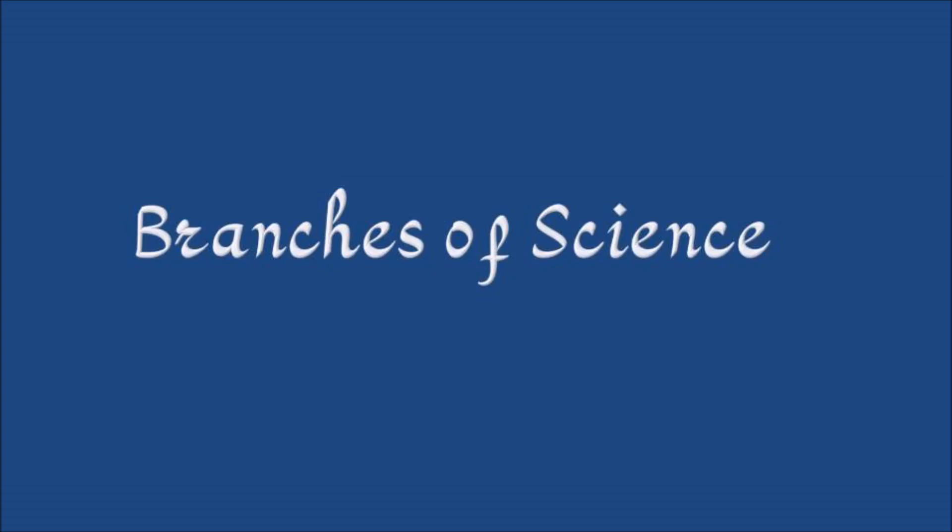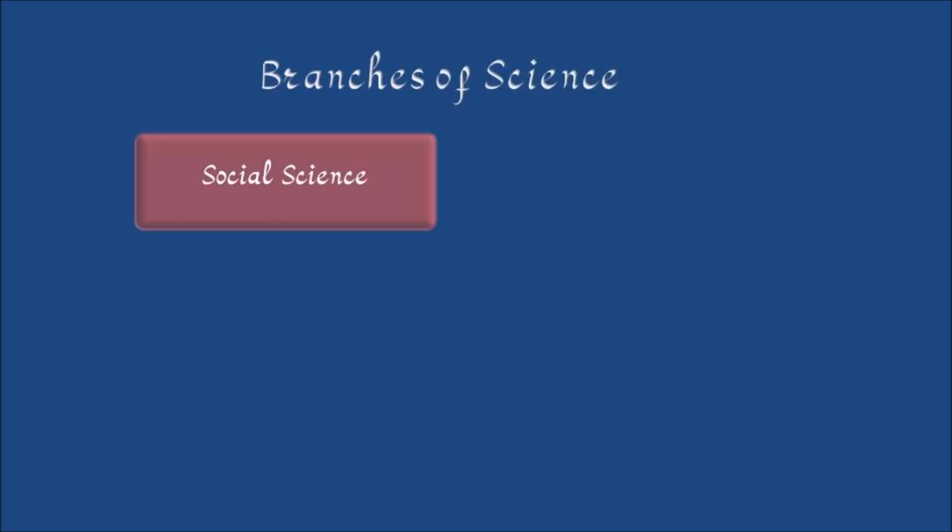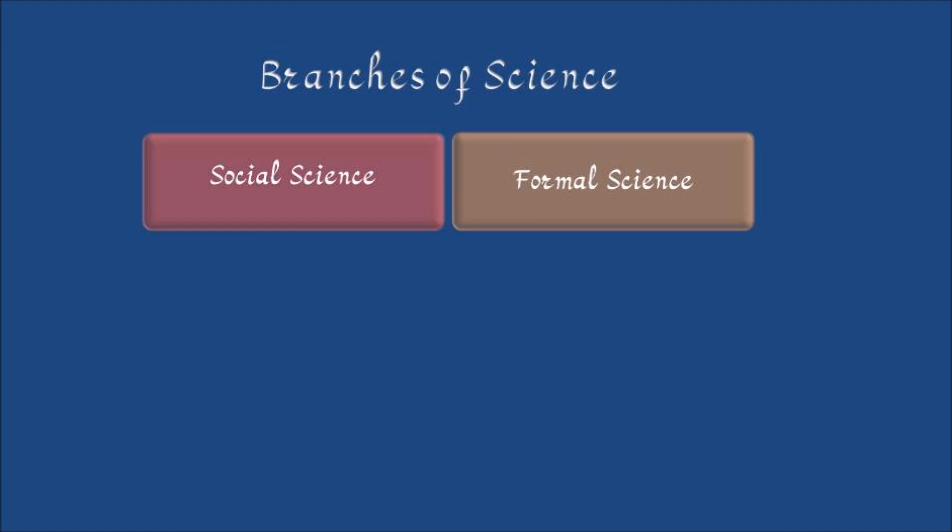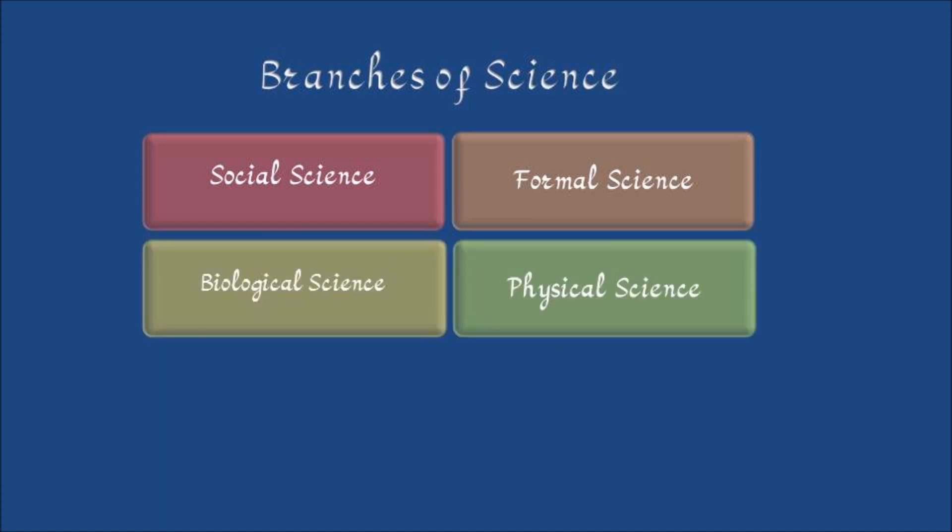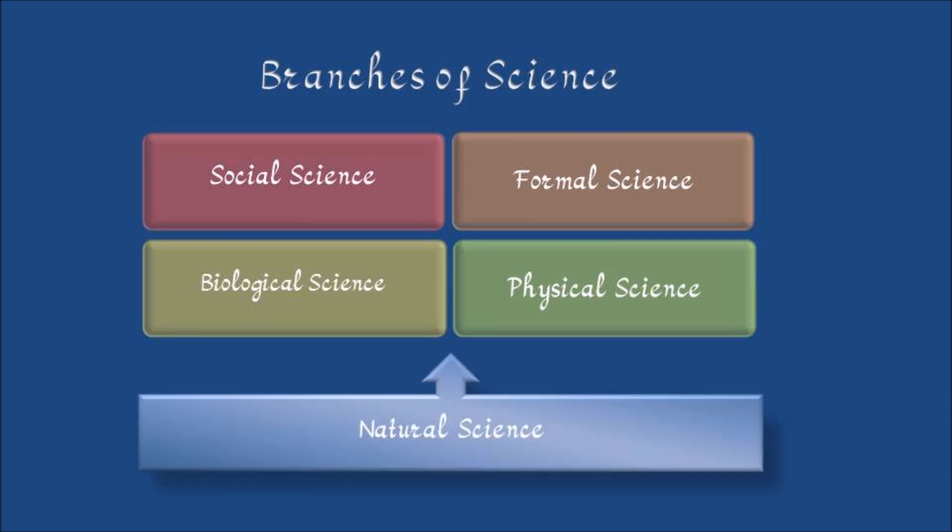Today I am going to discuss with you about the branches of science. Basically there are four major branches of science: social science, formal science, biological science, and physical science. The last two, biological science and physical science, are also called natural science.